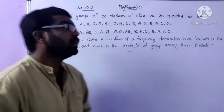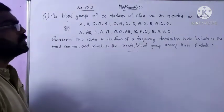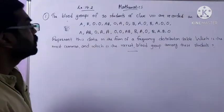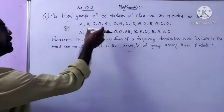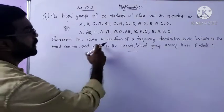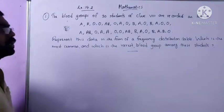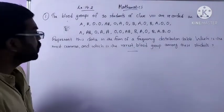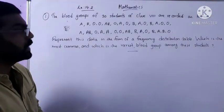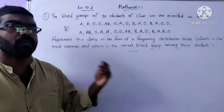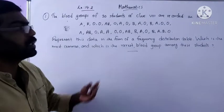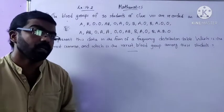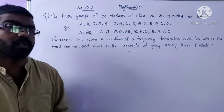Here the first question is: the blood groups of 30 students of Class 8 are recorded as follows. A list is given. We have to represent this data in the form of a Frequency Distribution Table, find which is the most common and which is the rarest blood group among these students. We are given the raw data and we have to make it a Frequency Distribution Table.